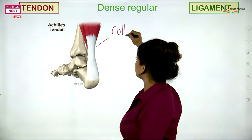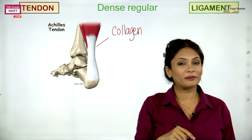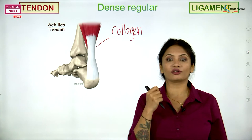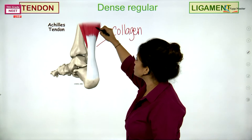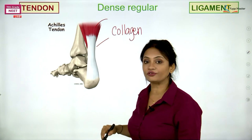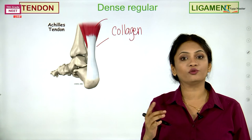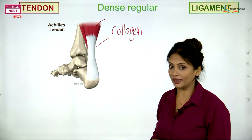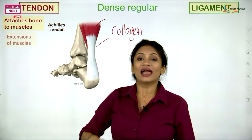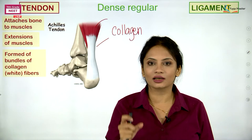Yellow fibres were made up of a protein known as elastin. Collagen helped in giving rigidity and tensile strength. So naturally, if you have a soft muscle and you need strength from it, the tendon connecting that muscle with the bone is made up of white fibre — collagen protein. A tendon attaches the bone to the muscle and is formed of bundles of white or collagen fibres.